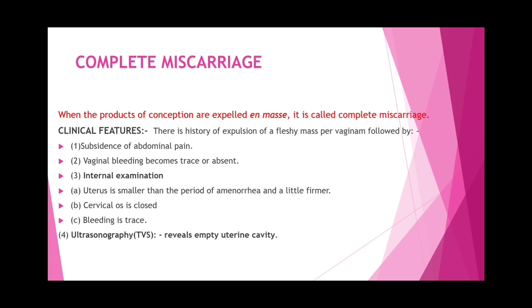Incomplete miscarriage means some part of the abortus remains in the uterus, making continuation of pregnancy impossible. Complete miscarriage is when all products of conception are expelled in a mass. Clinical features include pain and bleeding; abdominal pain subsides when complete miscarriage occurs, and vaginal bleeding becomes scant.